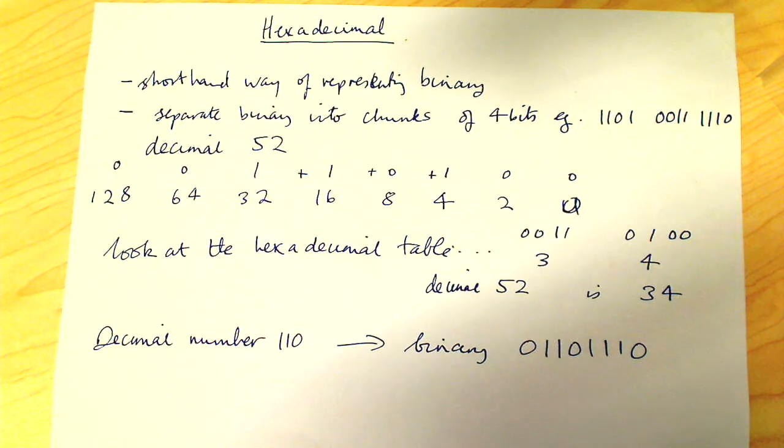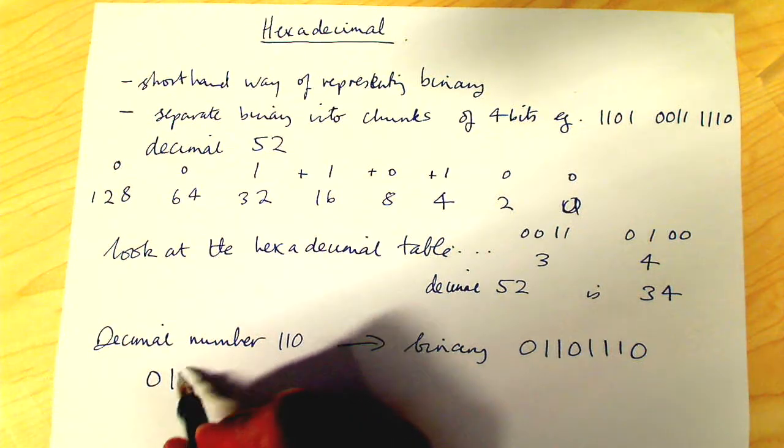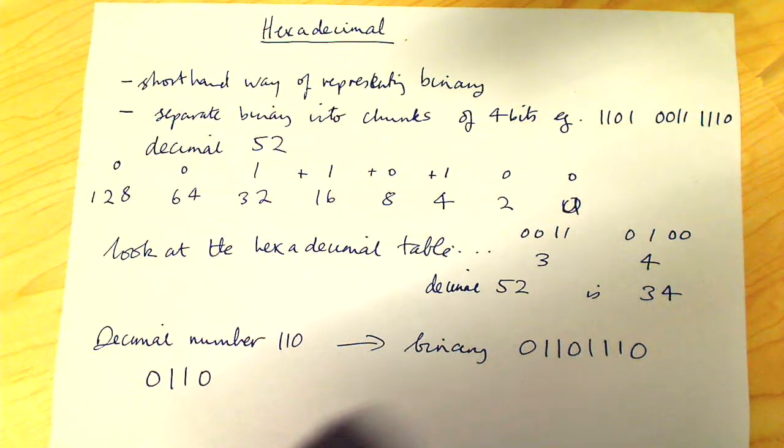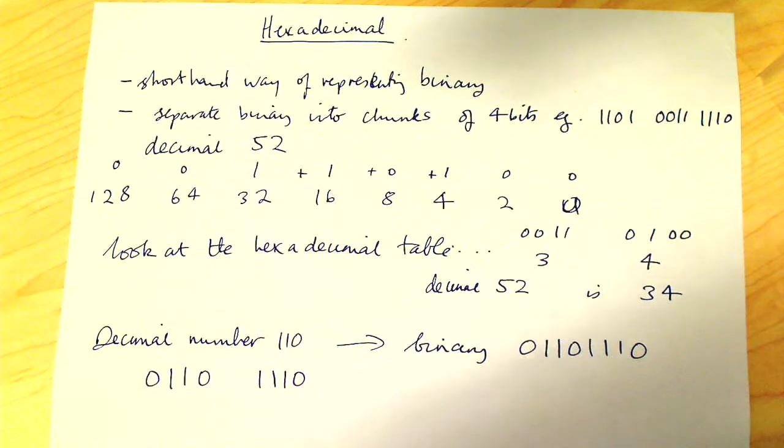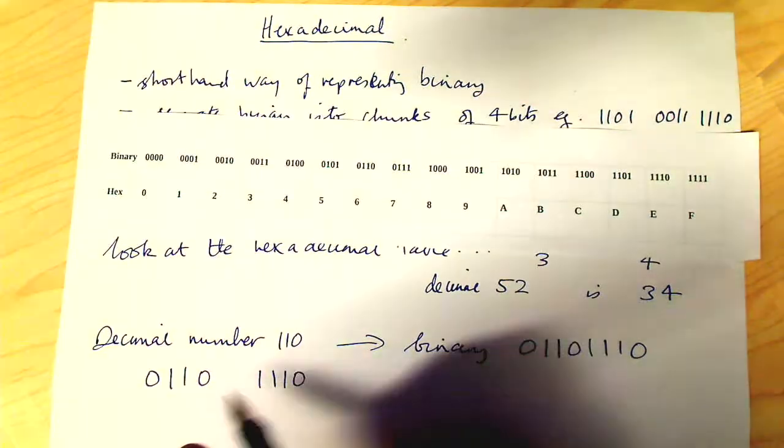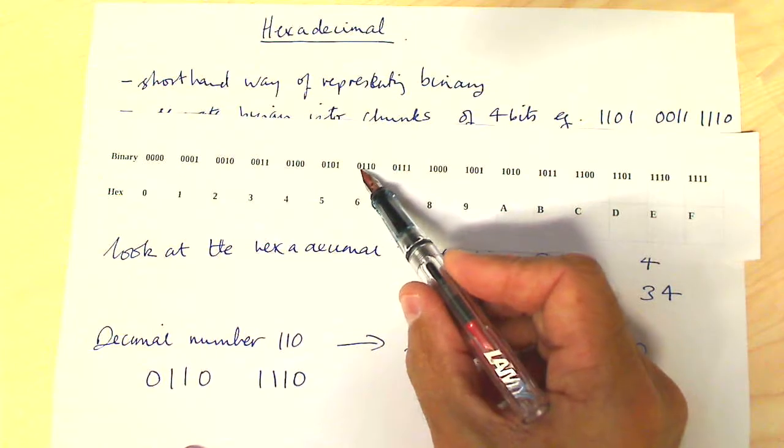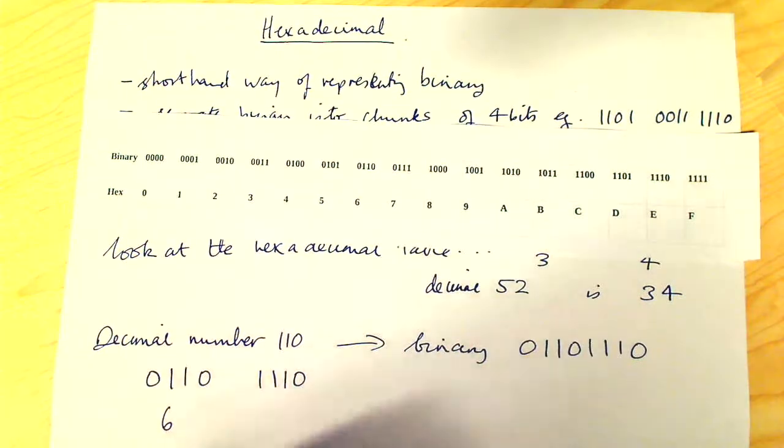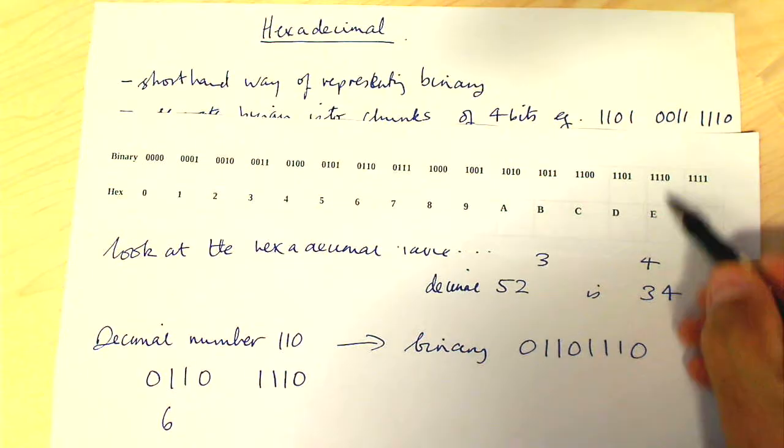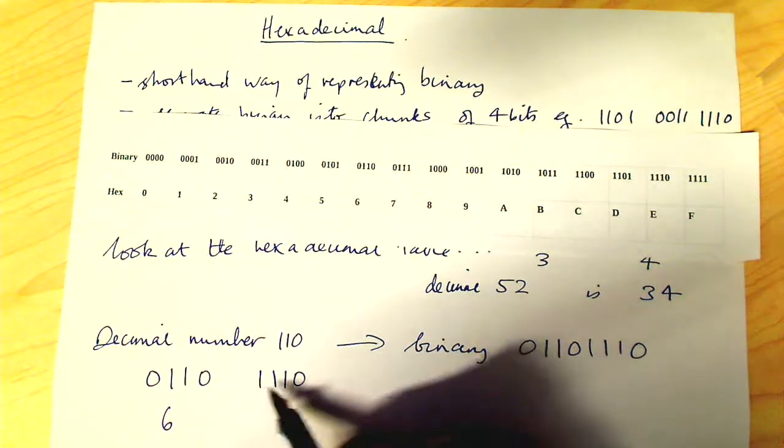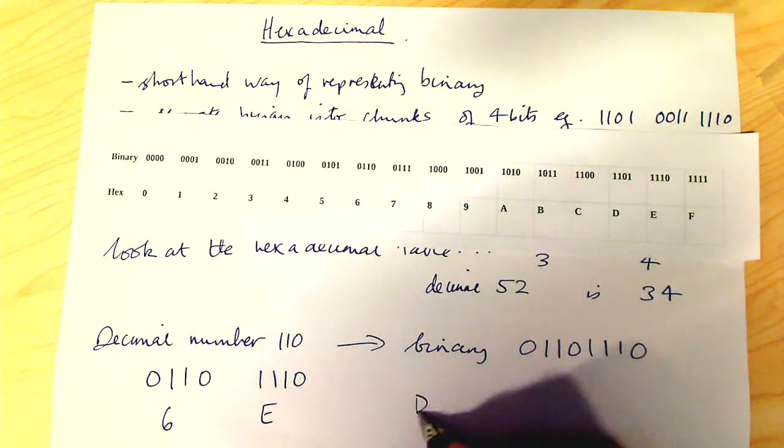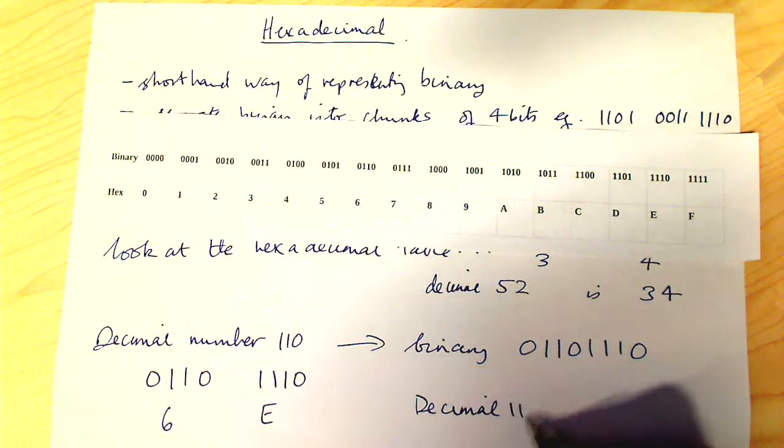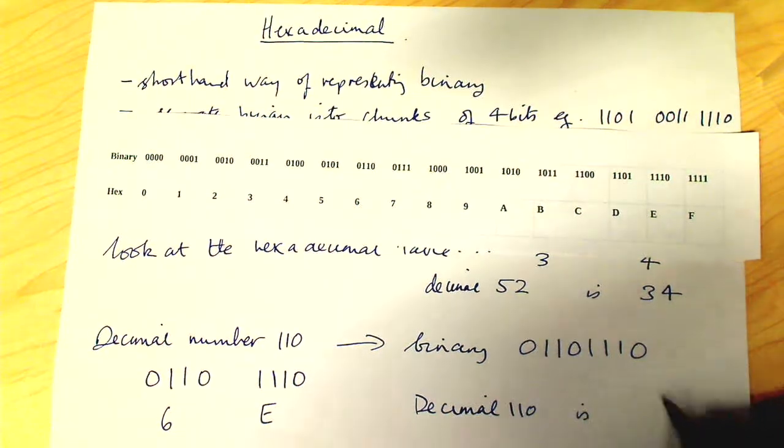So we split this up into two chunks of 0110 and 1110. We look in our table, so if we find it over here, 6 is 0110 and capital E is 1110. So we've got decimal 110 is 6E in hexadecimal.